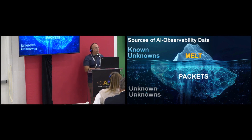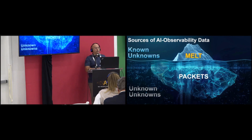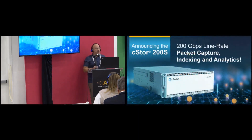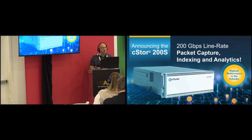One of the big challenges when dealing with packets for observability is scaling. Many challenge us and ask: how well can you scale? We're running networks of 100 gigabits per second, 400 gigabits per second, many links. This week we announced the highest-speed capture we know of in one box — 200 gigabits per second at line rate, with packet capture, indexing, and analytics all running at the same time.